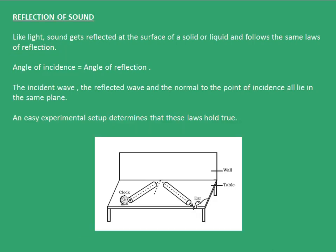Now let's move on with reflection of sound. Like light, sound gets reflected at the surface of a solid or liquid and follows the same laws of reflection. These are: the angle of incidence is equal to the angle of reflection, and the incident wave, the reflected wave, and the normal to the point of incidence all lie in the same plane.